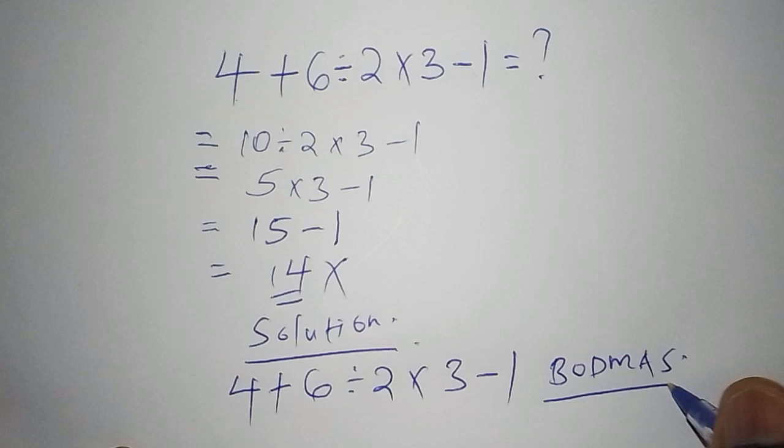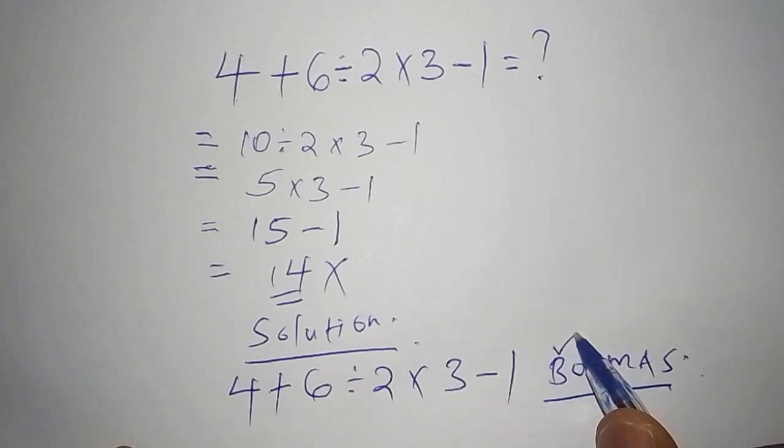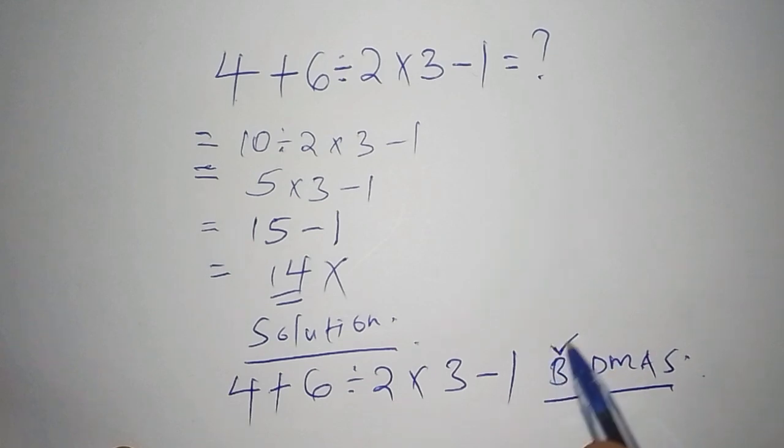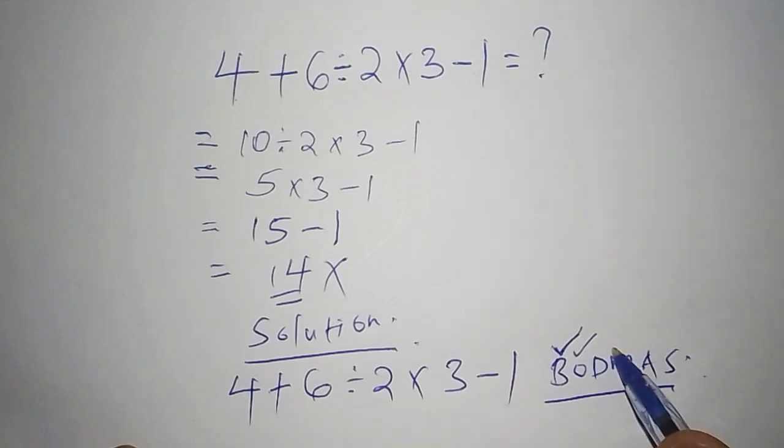So the BODMAS gets us on the correct order of operation that we shall start with. Now these letters they have their meaning like B stands for bracket, so here we don't have any bracket. O stands for of, we don't have any of. D stands for division.